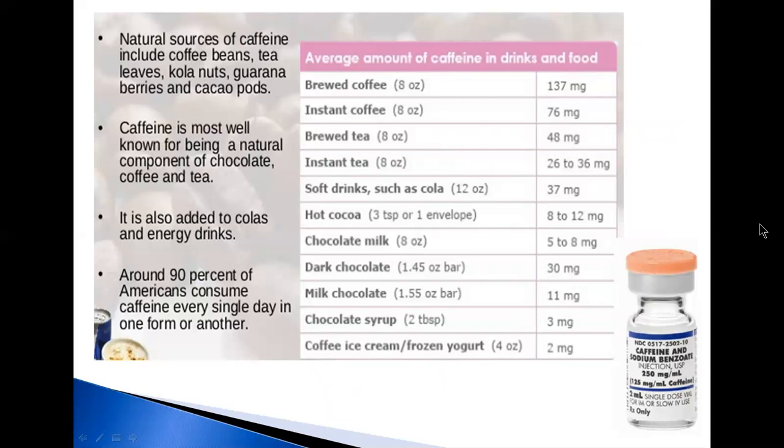Caffeine is classified by the US Food and Drug Administration as generally recognized as safe. Toxic doses, over 10 grams per day for an adult, are much higher than the typical dose of under 500 milligrams per day. A cup of coffee contains from 80 to 175 milligrams of caffeine, depending on what bean or seed is used and how it is roasted — darker roast means less caffeine.